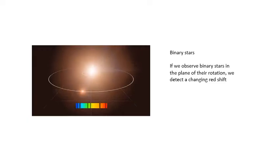Binary stars. If we look at binary stars, it depends what angle you're looking at them. If you look at this in the plane of rotation, so if you're looking at it side on, what we notice is again a red shift and then relatively a blue shift.